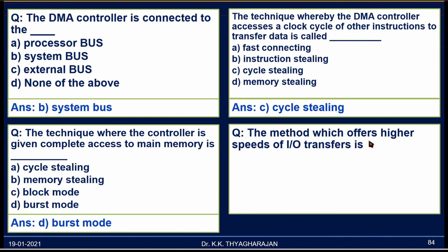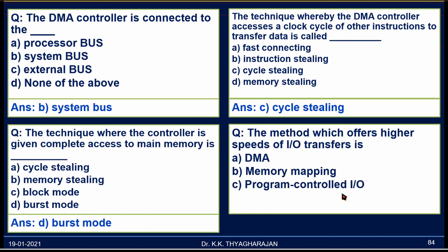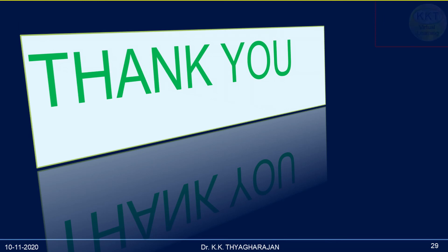The method which offers higher speeds of I/O transfer is: A) DMA, B) Memory Mapping, C) Program Controlled I/O, D) Interrupt Controlled I/O. Program Controlled I/O is very slow; Interrupt Controlled I/O is faster, but DMA is very, very fast because it is done by the DMA controller and the CPU is not involved in the process. So DMA is the correct answer. If this video is useful, please share with your friends, subscribe to the channel, and click the bell icon and choose All.